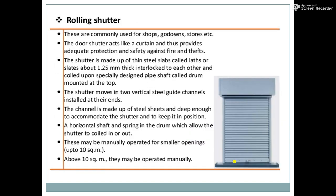The next type is rolling shutters. These are commonly used for shops, godowns, and stores. The door shutter acts like a curtain, providing adequate protection and safety against fire and thieves. A shutter is made up of thin steel slabs called laths or slits, about 1.25 mm thick, interlocked to each other and coiled upon a specially designed pipe shaft called a drum mounted at the top. The shutter moves in two vertical steel guide channels installed at their ends, deep enough to accommodate and keep the shutter in position.